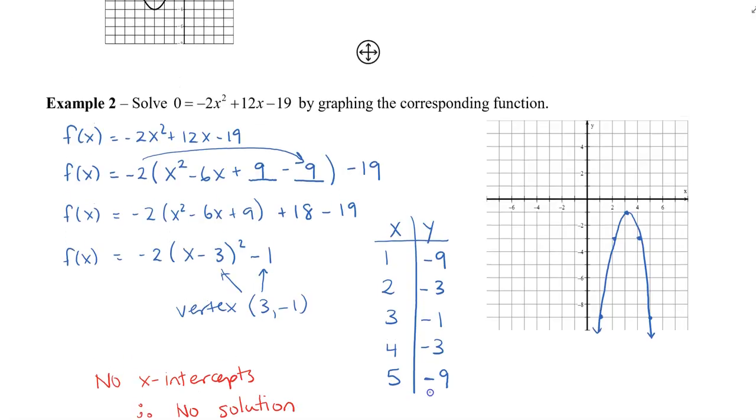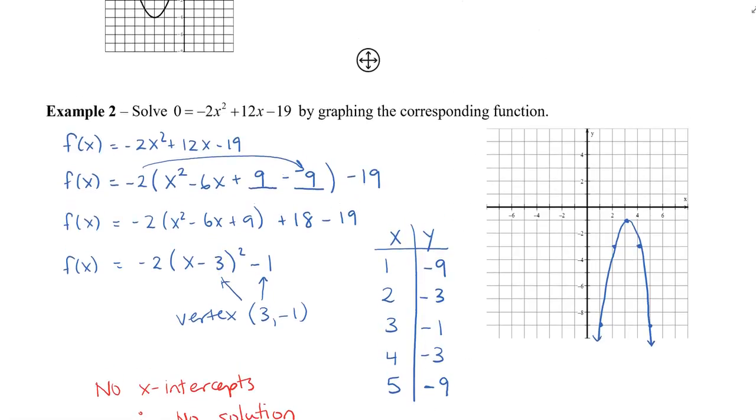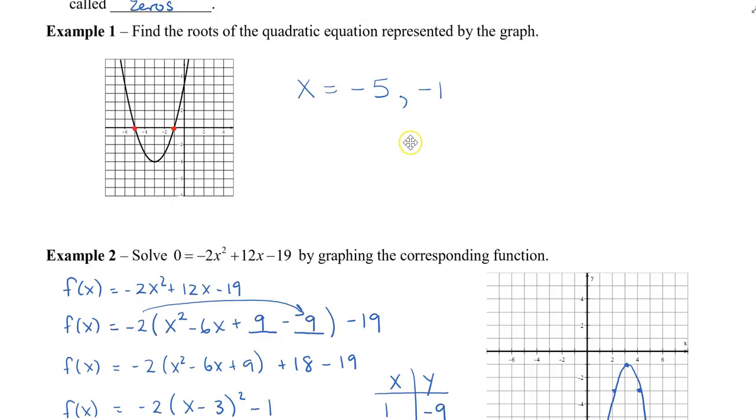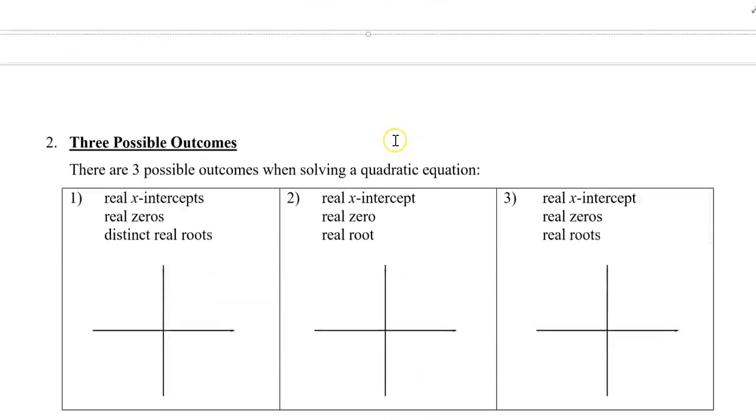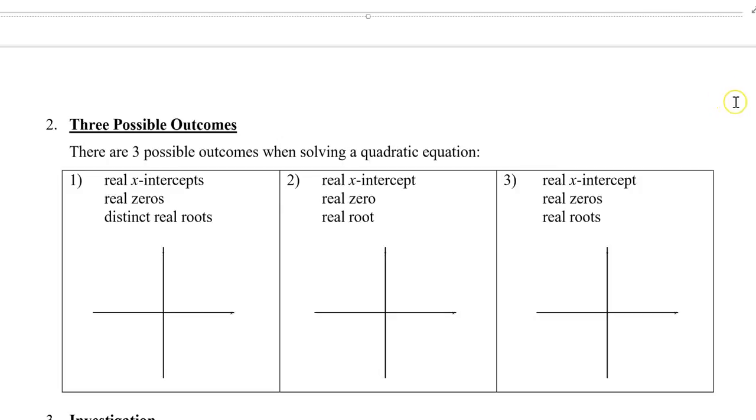Alright, so lastly, just to summarize what we've done here. And you can see that in this graph, we had two solutions. In this graph, we had none. So there are three possible outcomes when solving a quadratic equation. So like in the first graph, we can have two x-intercepts. So if the graph crosses the x-axis twice, we will have two x-intercepts. So two x-intercepts gives rise to two real zeros, because they're f of x, our y value is zero, which are also called two distinct roots, which means that they're different. So we can have the graph pointing up, or we can have the graph pointing down. And we would still have two solutions.